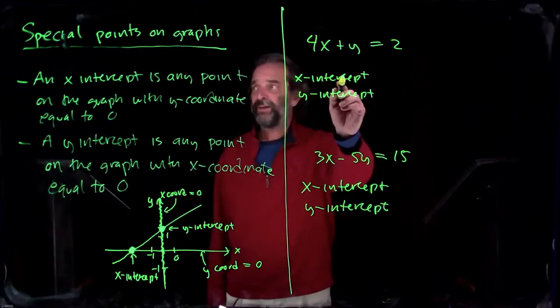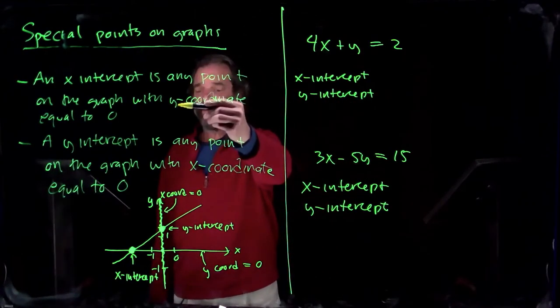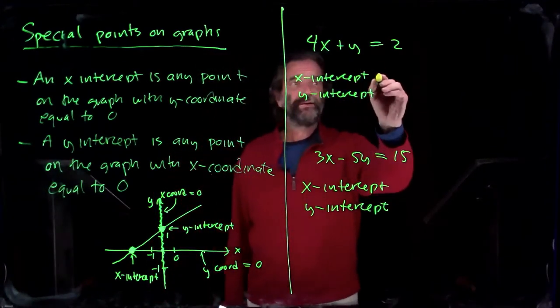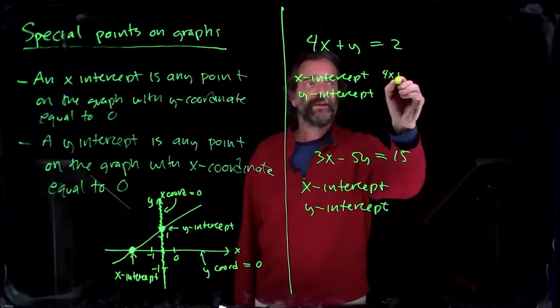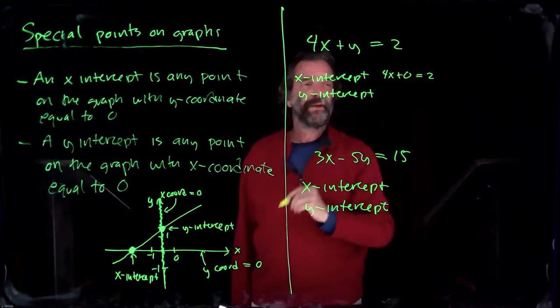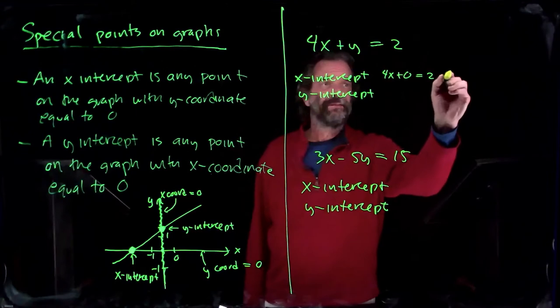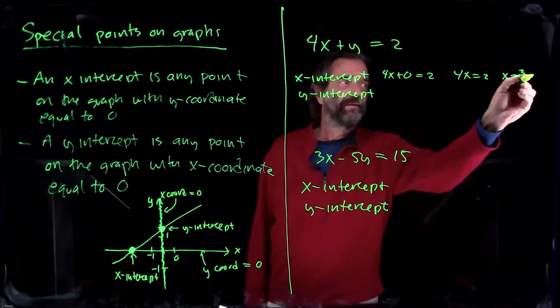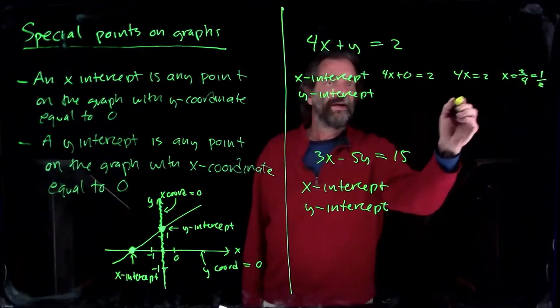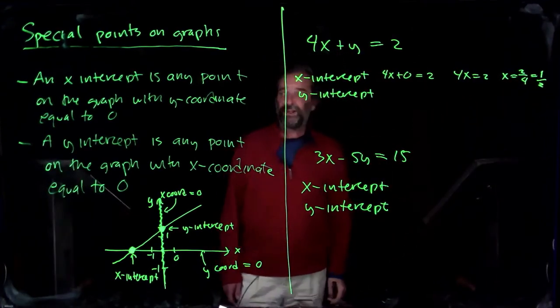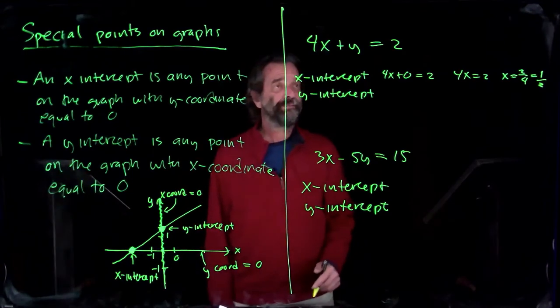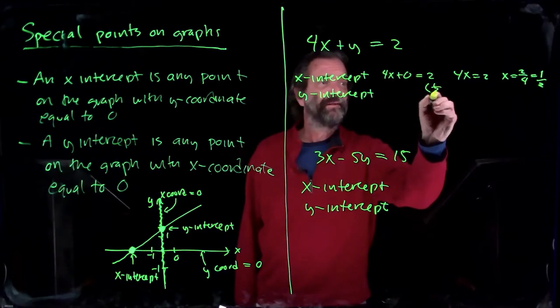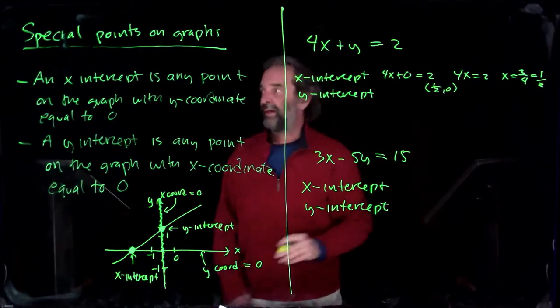So what does this here? X-intercept. The x-intercept has y equal to 0, because y equal to 0 puts you on the x-axis. So I put y equal to 0. 4x plus 0 is 2. Solve that for x. So it's 4x equals 2. Divide by 4. We get x is a half. And we set the intercept as a point. That's just the x-coordinate. The y-coordinate set equal to 0.